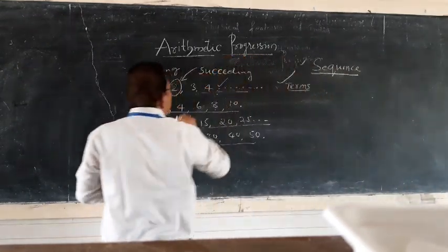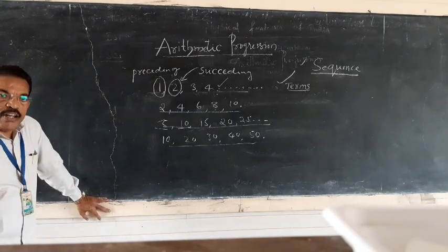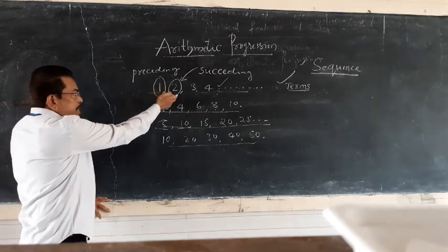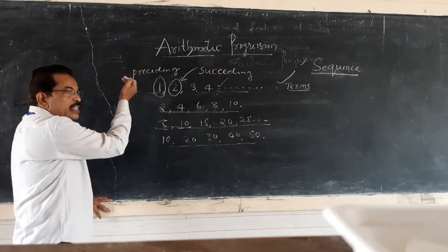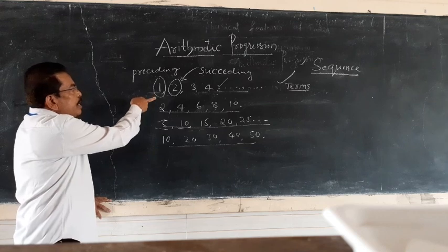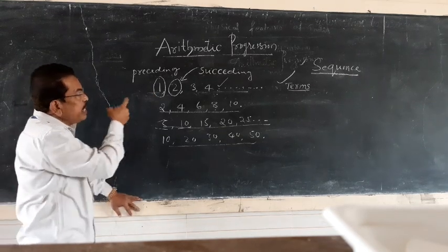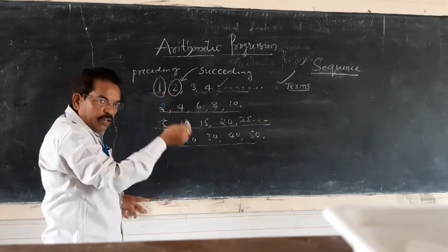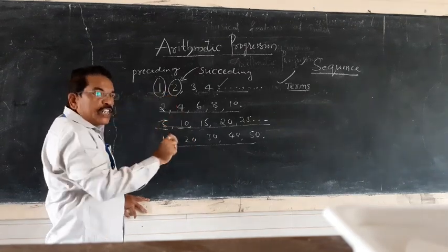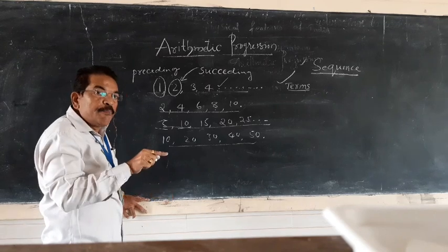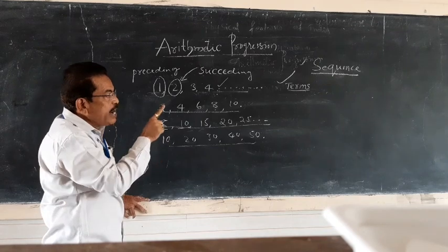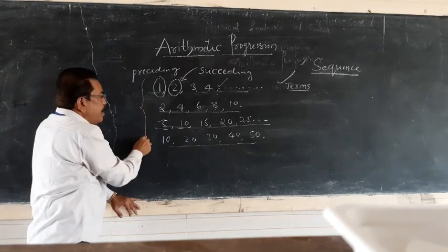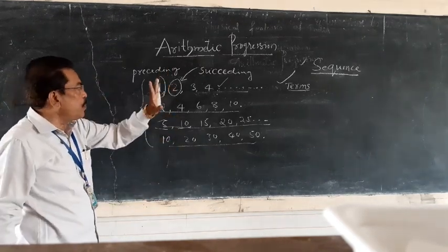After understanding sequences, we can define arithmetic progression. An arithmetic progression is a sequence in which the succeeding term is obtained by adding a fixed number to the preceding term. Examples of arithmetic progressions include: 1, 2, 3, 4; 2, 4, 6, 8, 10; 5, 10, 15, 20, 25; and 10, 20, 30, 40, 50.